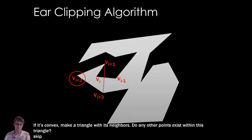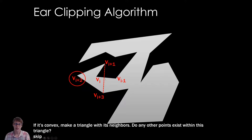Let's pick another vertex. Is it convex? Great — so let's make a triangle with its neighbors, the vertex before and after. Then we find out: are there any other points within my triangle? If there's another point inside my triangle, I can't clip this off because I'd make a mistake — I can't turn this into a triangle. So I have to skip this one too.